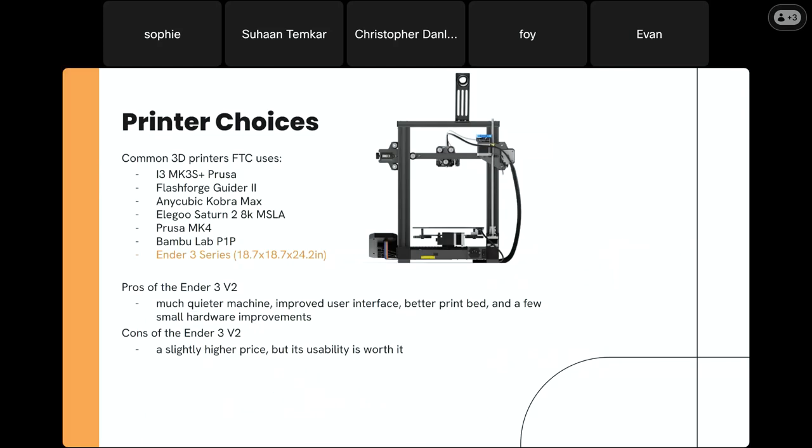These are some printer choices that FTC teams commonly use. We use an Ender 3 series, which has worked really well for us — good user interface and settings, adjustable print bed with good adhesion, and we can make small improvements to the hardware. It is somewhat more expensive but can be shared between teams. Some other common ones are the Prusa and the Bamboo Lab, which are pretty popular among other teams.